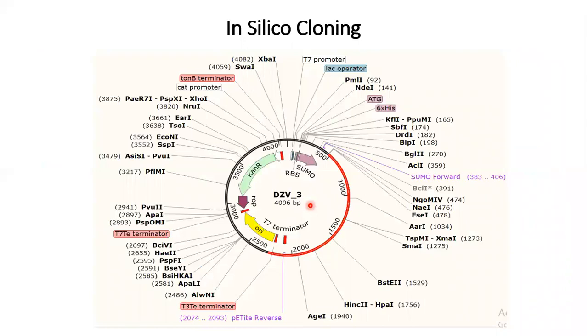Here is the in silico cloning study where the vaccine V3, I mean, the nucleotide sequence of the vaccine V3 has been inserted into a pET-28a plasmid actually. And this newly constructed recombinant plasmid can be used for the mass production of our vaccine in E. coli strain K12.